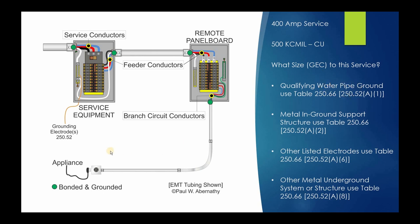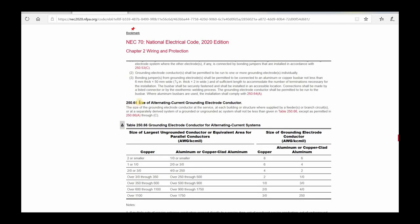Let's assume we have a water pipe ground that complies with 250.52(A)(1) — that means 10 feet in contact with the earth — and we want to size this grounding electrode conductor. Two things we need to know: what type of electrode we're dealing with (we know it's a water pipe), and what size conductors are supplying the service. Here we know these are 500 kcmil. So we go to the National Electrical Code, to 250.66: Sizing Grounding Electrode Conductors.